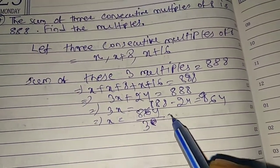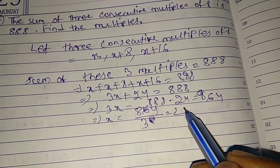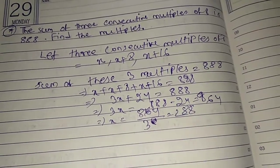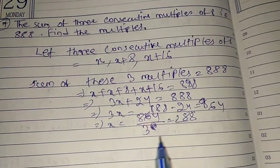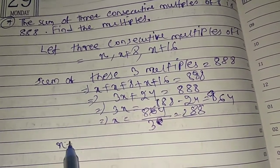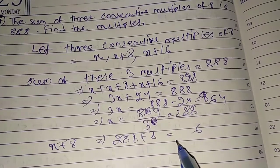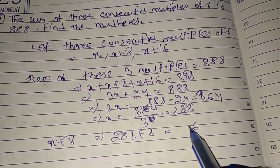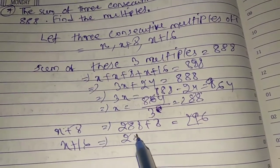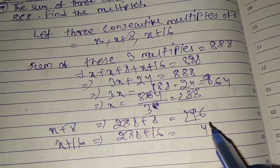Then X equal to 864 by 3. So X is 288. Then the next two multiples are X plus 8, that is 288 plus 8, which is 296. Then third is X plus 16, 288 plus 16, that is 304.